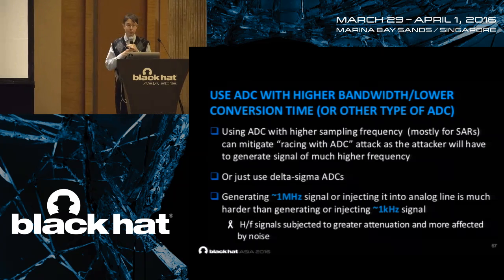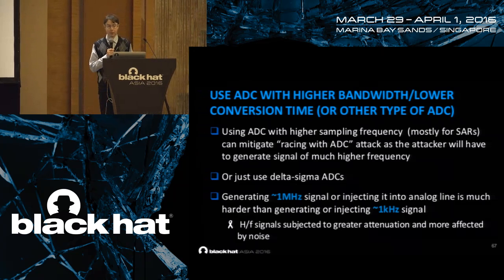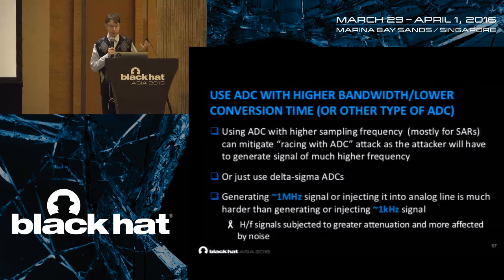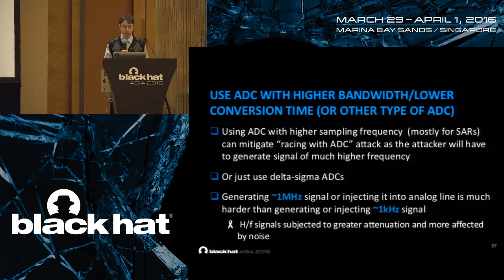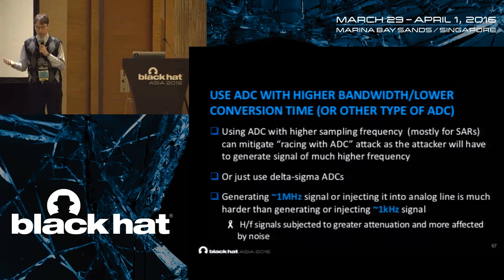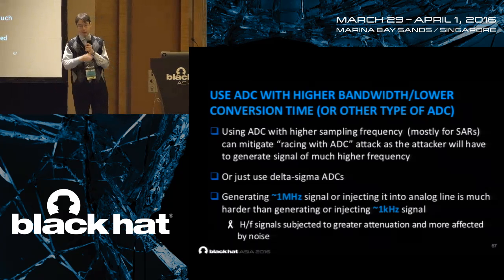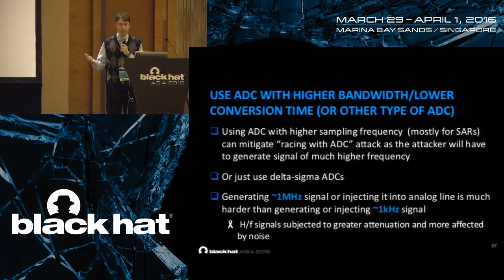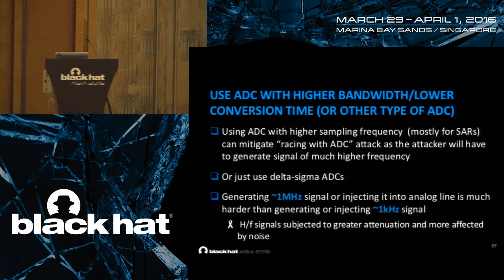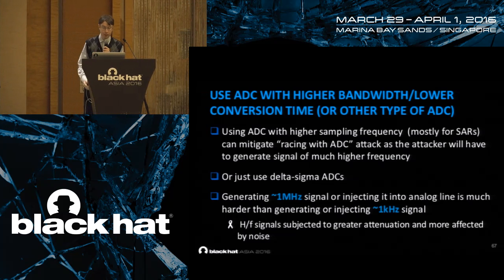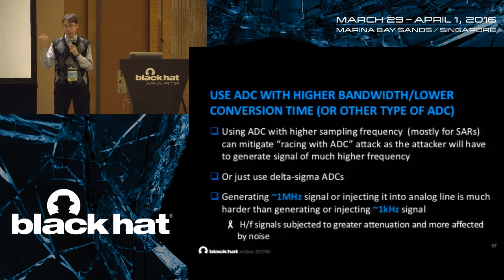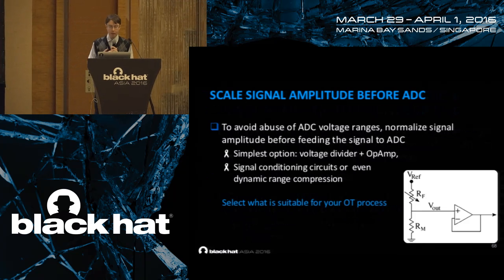Another solution is to use an ADC with higher bandwidth, low conversion time, or a different type of ADC such as sigma-delta. Using an ADC with higher frequency — mostly for SAR — can mitigate these attacks, as the attacker will need to generate a signal with much higher frequency. Generating a high-frequency signal — for example 1 MHz — on a noisy ICS line is really hard to keep reliable, because high-frequency signals are subjected to great attenuation and are more affected by noise compared to, say, a 1 kHz signal.